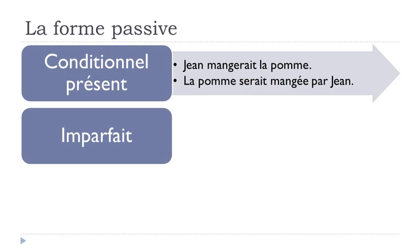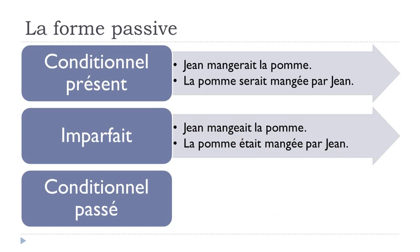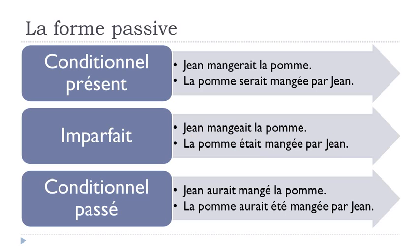For l'imparfait: Jean mangeait la pomme becomes la pomme était mangée par Jean. And the last tense is le conditionnel passé: Jean aurait mangé la pomme becomes la pomme aurait été mangée par Jean. Aurait été is the conditionnel passé form of être.